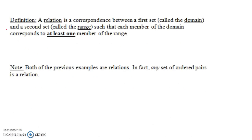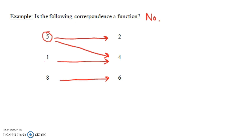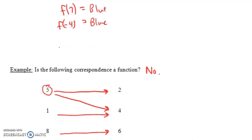That example is what's called a relation. A relation is a correspondence between a first set called the domain and a second set called the range, such that each member of the domain corresponds to at least one member of the range. For a function it was exactly one, but for a relation it says at least one. In this example, 8 corresponds to one thing, 1 corresponds to one thing, and 5 corresponds to two things — so that is a relation. Any function is also a relation.